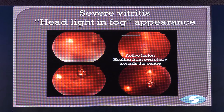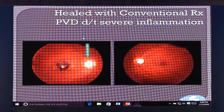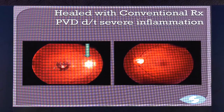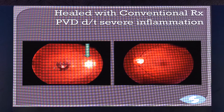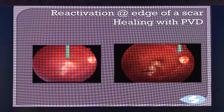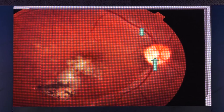This is a very typical severe vitritis — headlight in the fog. The severe vitritis leads to a PVD very soon. Here is a Weiss ring in one eye while the fellow eye has nothing. This vitreous disturbance occurred because of toxoplasmic retinitis, and there were two retinal breaks in the periphery. You can see an active lesion, and when it heals it has led to a Weiss ring.